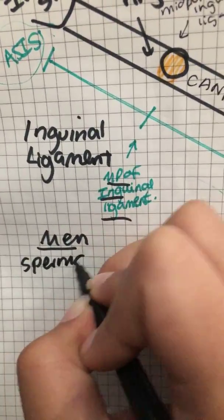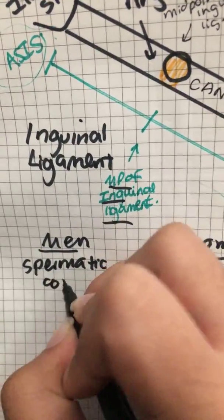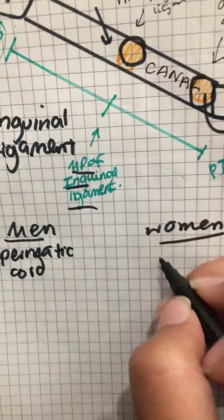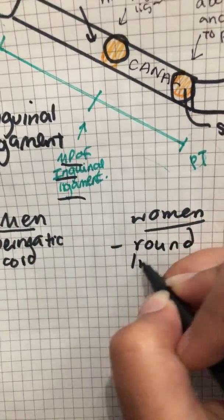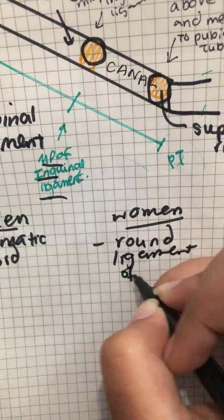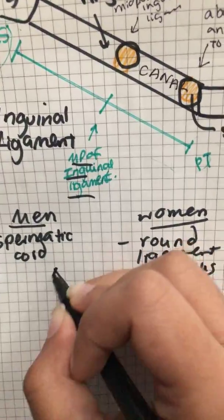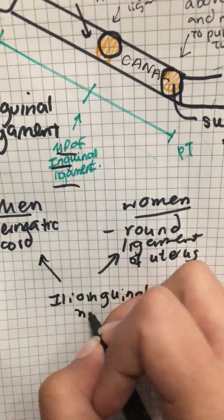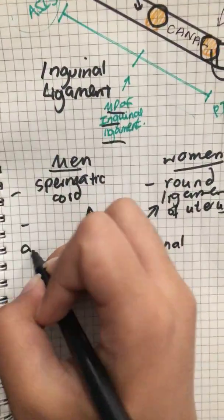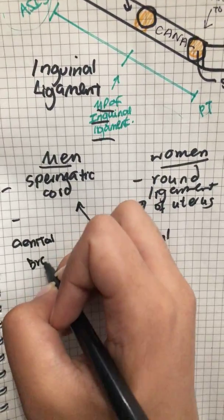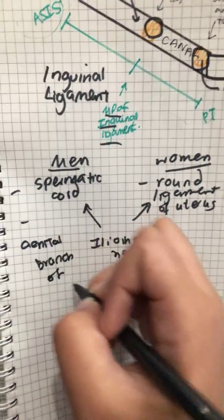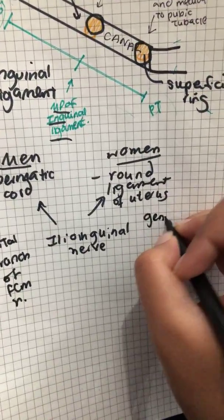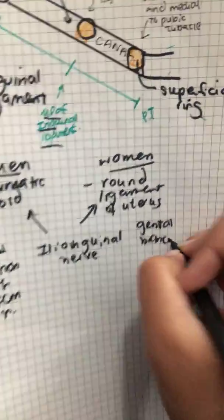In men, it is the spermatic cord that passes through the inguinal canal. In women, it is the round ligament of the uterus. In both men and women, there is a sensory nerve known as the ilioinguinal nerve, and there is also the genital branch of the genitofemoral nerve.